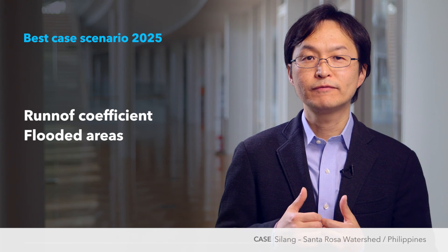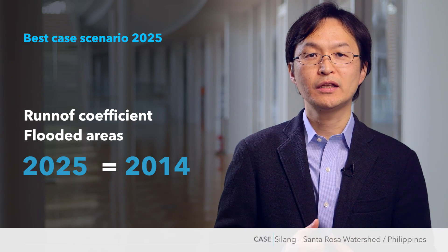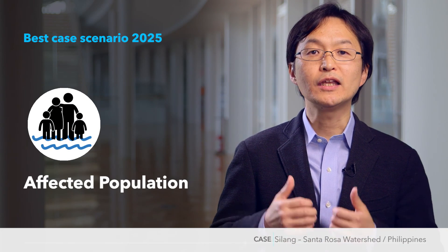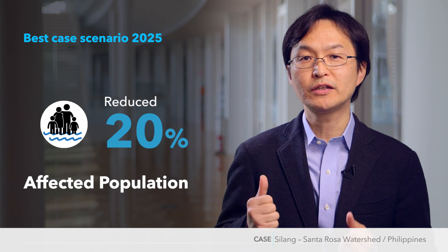The preservation of existing vegetation and climate sensitive development practiced with runoff mitigation measures will reduce rainfall runoff, leading to less intense and less frequent flooding. In the Silang-Santa Rosa watershed, the best case scenario is that the runoff coefficient and flooded areas in 2025 will remain the same as those in 2014. As a result, the expected population affected by flooding in 2025 will be reduced by 20% and the number of people in the flood affected areas will be substantially lessened.